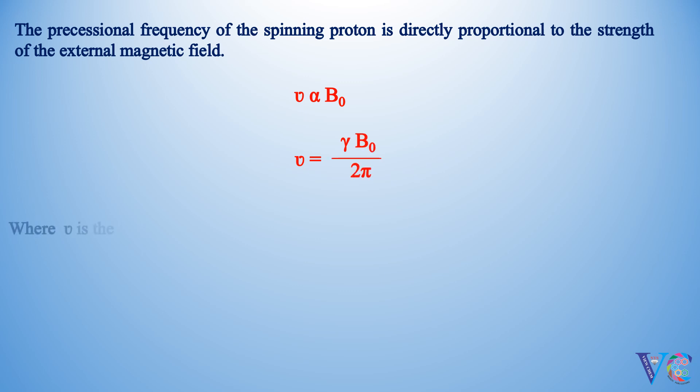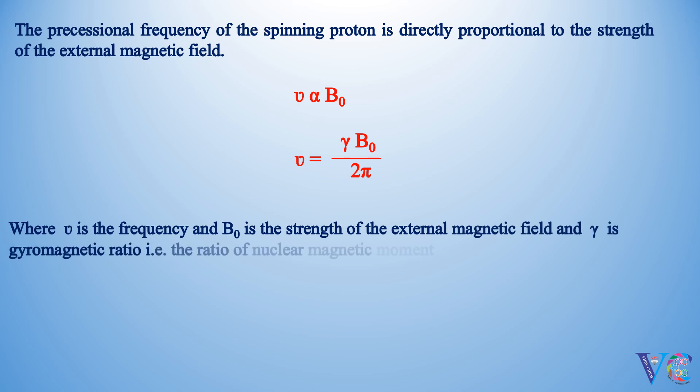Where ν is the frequency and B0 is the strength of the external magnetic field, and γ is gyromagnetic ratio, that is the ratio of the nuclear magnetic moment to its nuclear angular momentum.